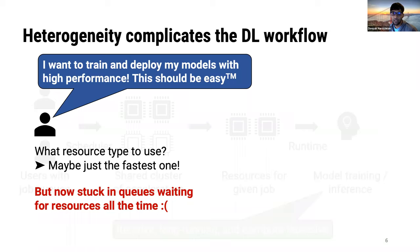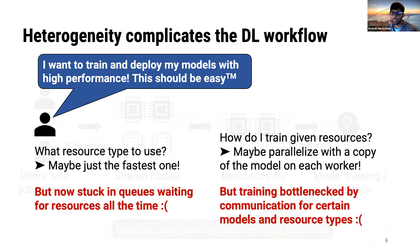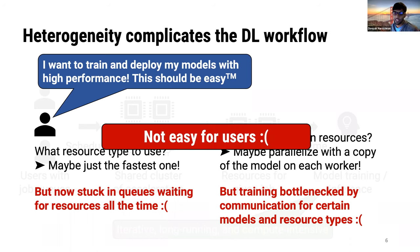Given dedicated resources, users employ frameworks like PyTorch or TensorFlow for training or inference. For modern deep models, computations are iterative, long-running, and compute-intensive. Users want to train and deploy models with high performance, but in practice they must make key decisions that critically impact performance. For example, it's not always clear how users should pick resource types — should they use a V100 or A100 GPU? A naive policy of always choosing the fastest GPU can lead to jobs stuck in queues if all users make the same decision.